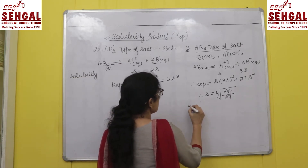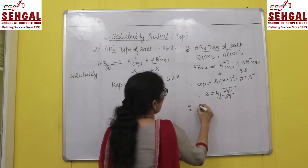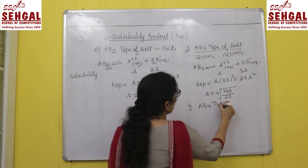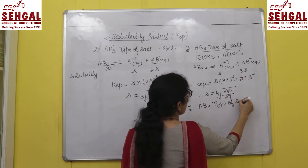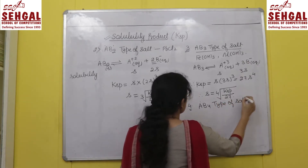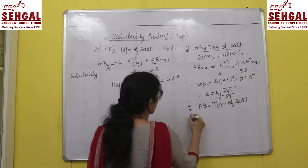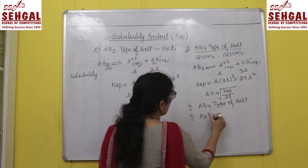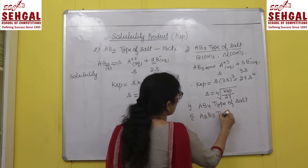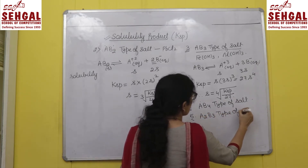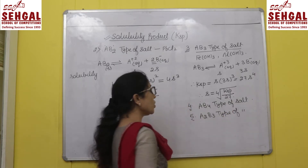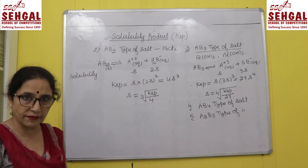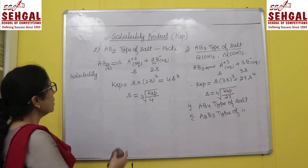Try deriving the formulas yourself for other salt types: for an AB₄ type salt, what would be the relation? Similarly, for an A₂B₃ type salt, what would the K_sp–S relation be? You can now derive these quite easily.